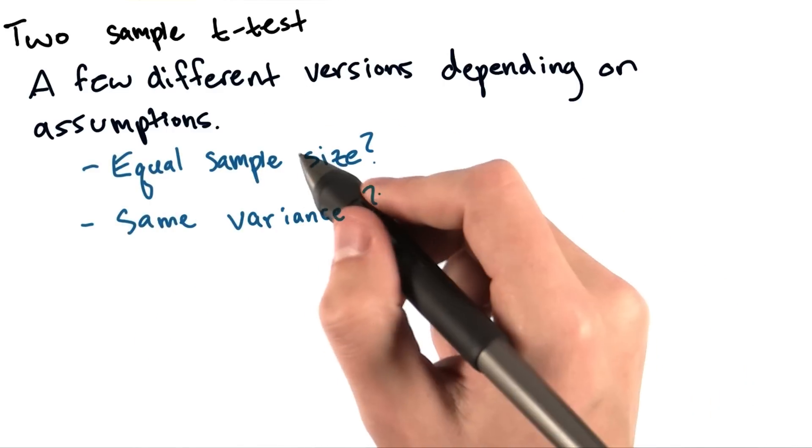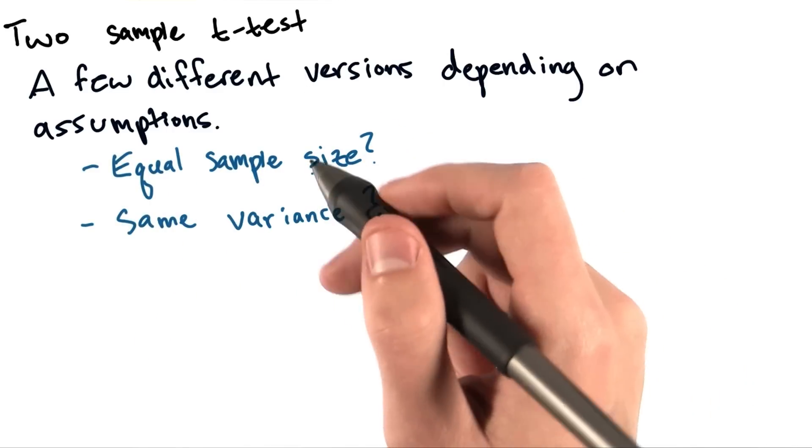So we might want to ask questions such as, do our samples have the same size, and do they have the same variance?